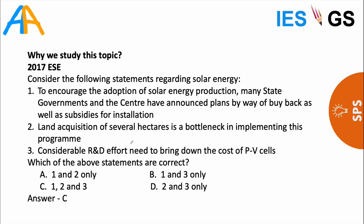A relevant 2017 ESE question: 'Consider statements regarding solar energy: state governments and center have announced buyback plans and subsidies for installation; land acquisition of several hectares is a bottleneck; considerable R&D effort is needed to bring down the cost of PV cells.' All three statements are correct — land acquisition remains a major roadblock (hence the new mode), and R&D for low-cost, flexible, efficient photovoltaic cells in material science is still needed. The answer is C.